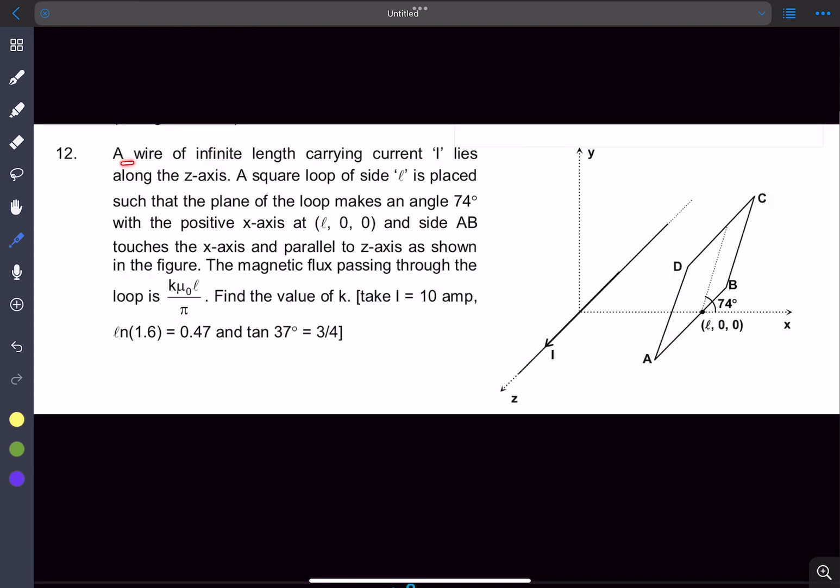The problem statement is that we are given a wire of infinite length which is placed along the z-axis. Then we have a square loop of side L which is placed such that the plane of the loop makes an angle 74 degrees with the positive x-axis, and the side AB touches the x-axis at the point (L, 0, 0). The plane of the square loop is parallel to the z-axis, so we have to find the magnetic flux through the loop.